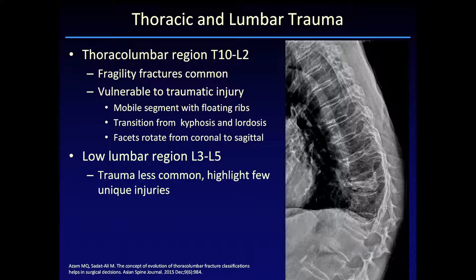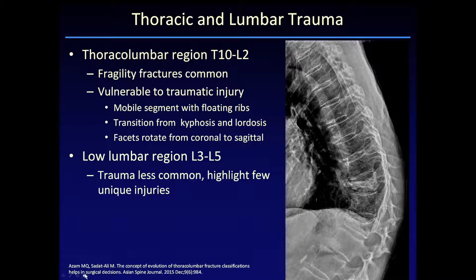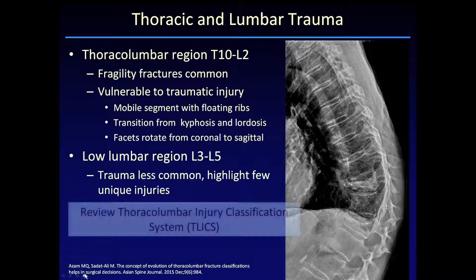This area is quite mobile. And unlike the upper thoracic spine, where the ribs form a rigid ring with the sternum and are relatively protected, the ribs are floating at the thoracolumbar junction. We're transitioning from kyphosis to lordosis in this zone, so the facet joints are changing orientation and there's a lot of movement that takes place. The lower lumbar spine has fewer injuries and is relatively protected, so I'm just going to highlight a few of the unique injuries that take place in that region.